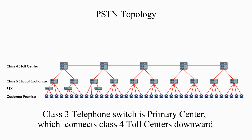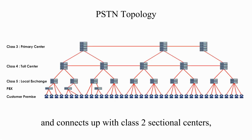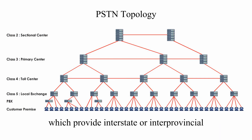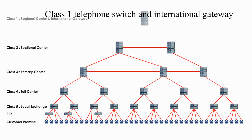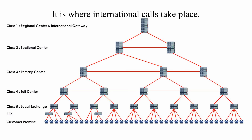Class III telephone switch is a primary center which connects Class IV toll centers downward and connects up with Class II sectional centers, which provide interstate or interprovincial connections for national long distance calls. Class I telephone switch and international gateway manage domestic calls to other countries — it is where international calls take place.